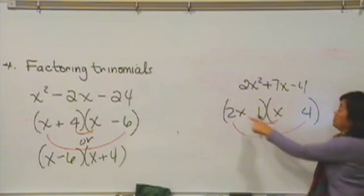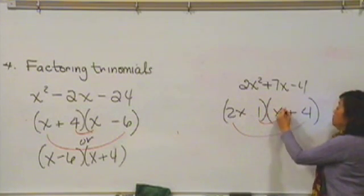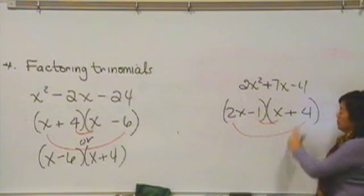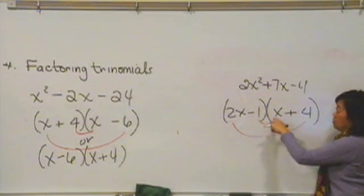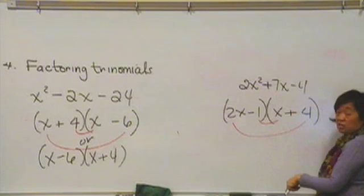I can make it 7 if the 8x is positive, and if the 1x is negative. Positive 8x, negative 1x, that's 7x, and let's just check our last one.